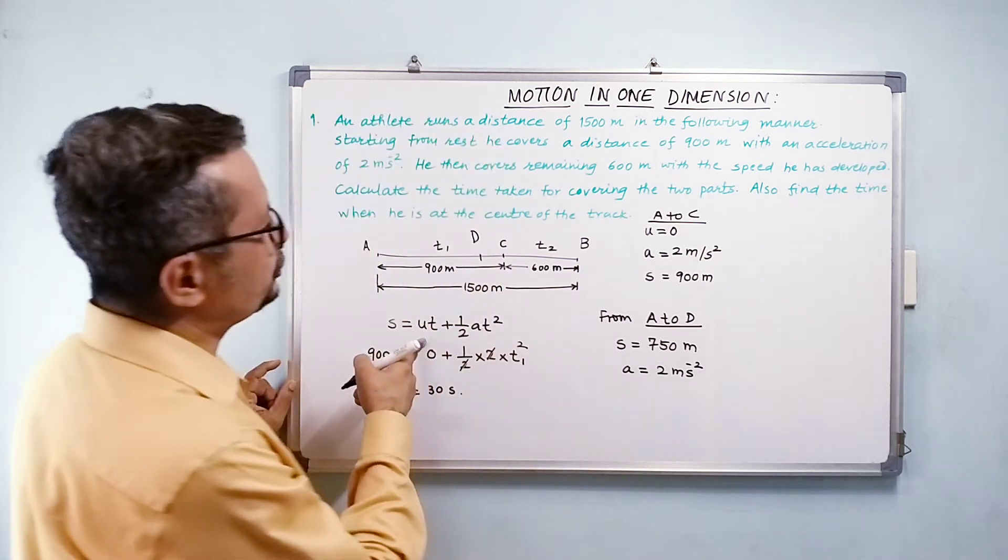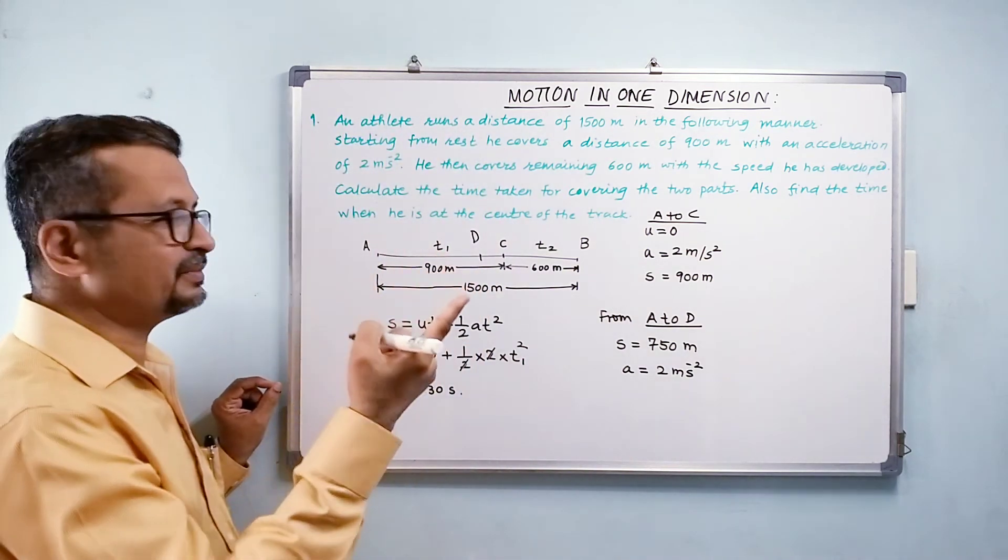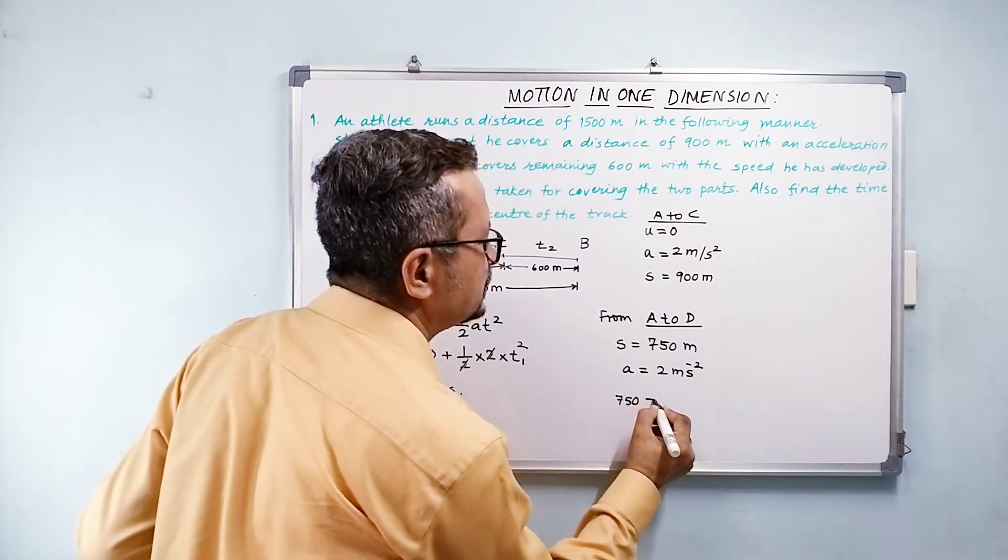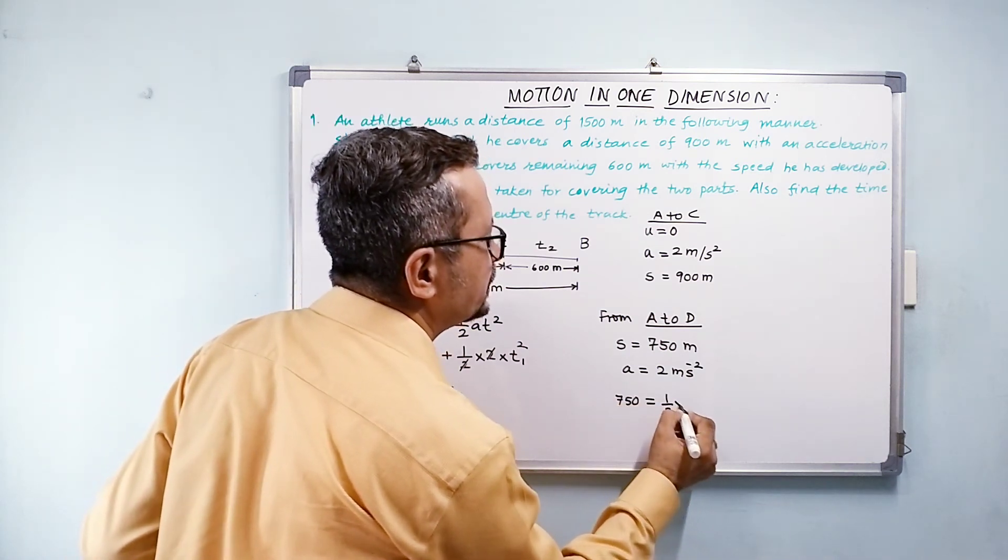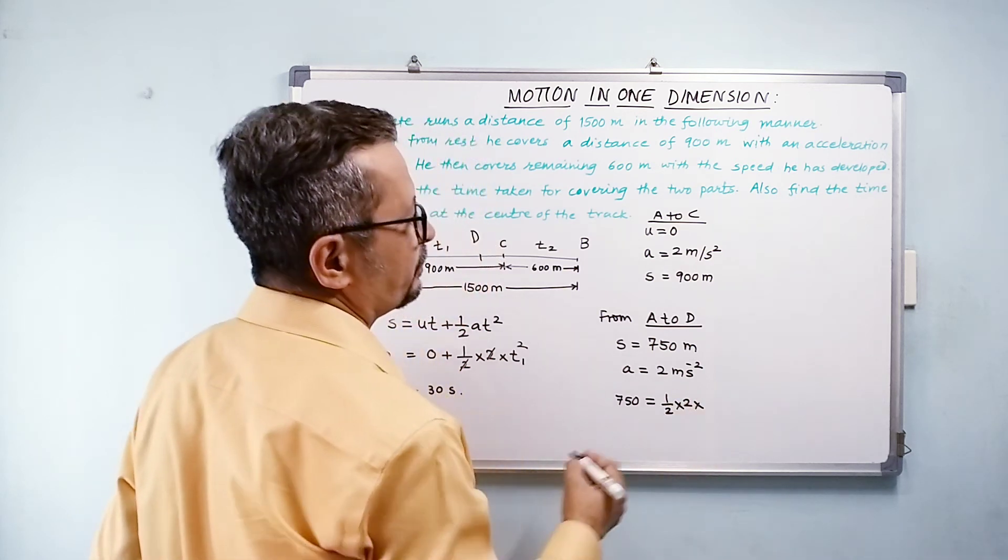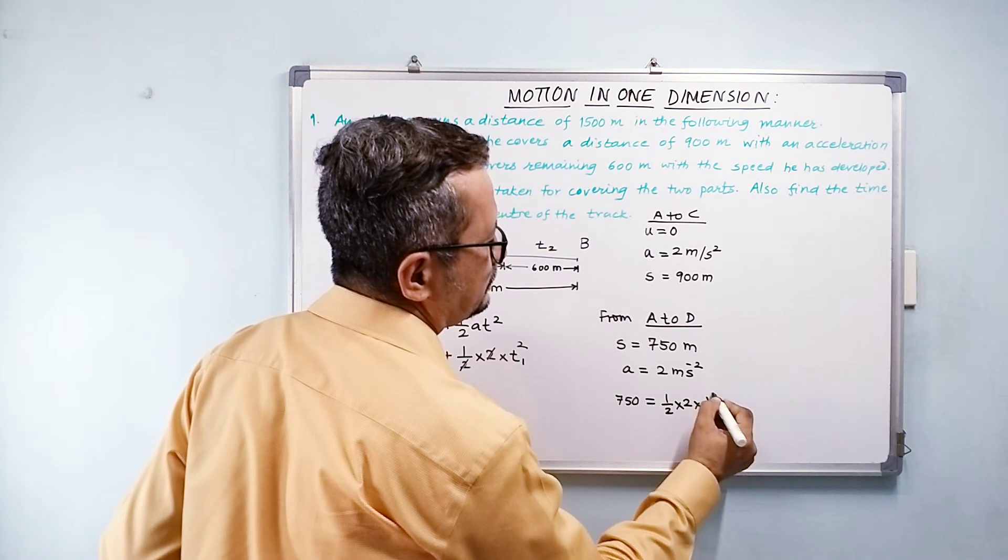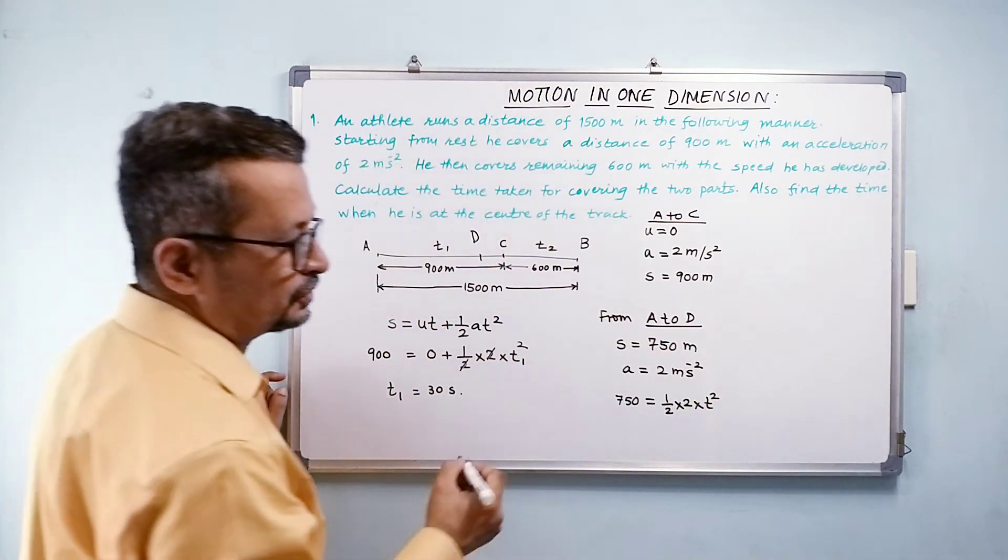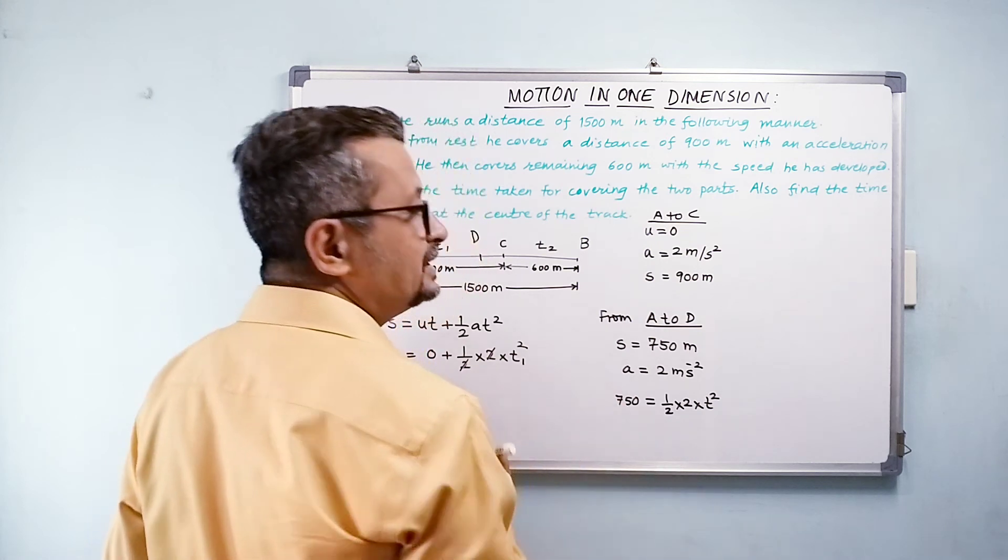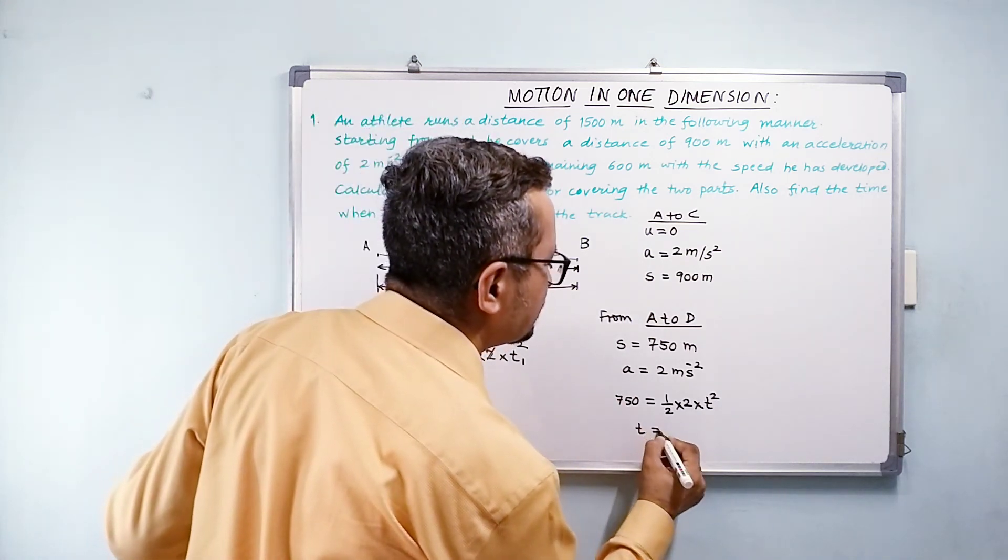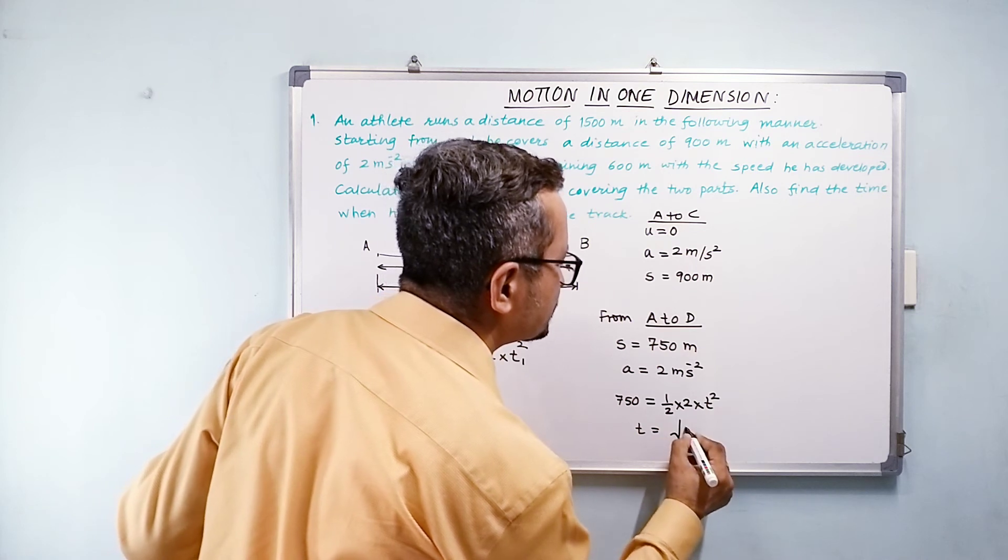So my s equals ut plus half at squared. I am going to use the same thing. I would write 750 equals half into 2 into t squared. So my t squared is going to be 750.